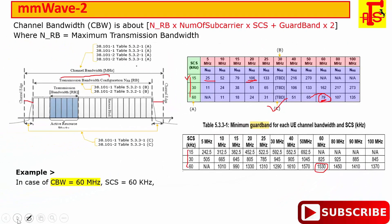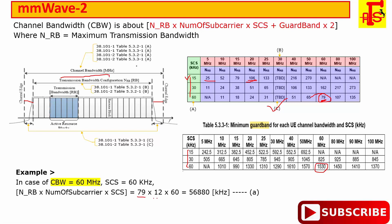Looking at a worked example: subcarrier spacing is 60 kHz and bandwidth is 60 MHz. The number of resource blocks is 79 and the number of subcarriers per RB is 12, which is the same for all subcarrier spacings. So transmission bandwidth equals 79 × 12 × 60 kHz, which equals 56,880 kHz.